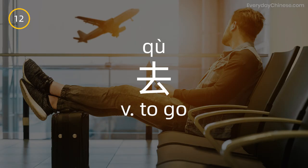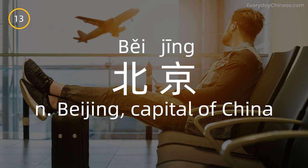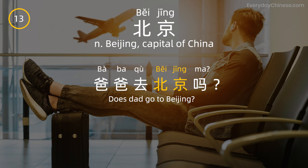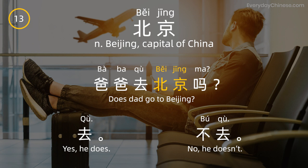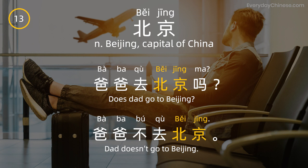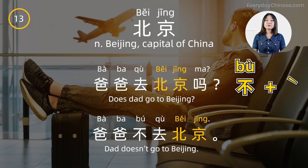去 — to go. 北京 — capital of China. 爸爸去北京吗? — Does dad go to Beijing? 去 (yes, he does) / 不去 (no, he doesn't). 爸爸不去北京 — Dad doesn't go to Beijing. Note that when 不 is followed by a fourth tone, 不 should change into second tone: 不.